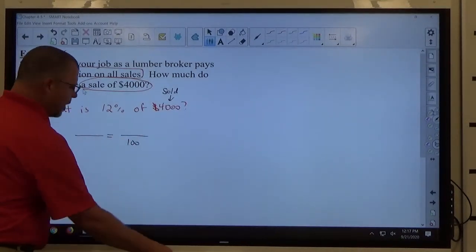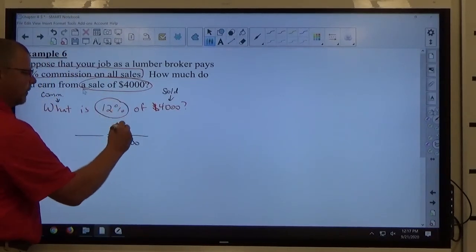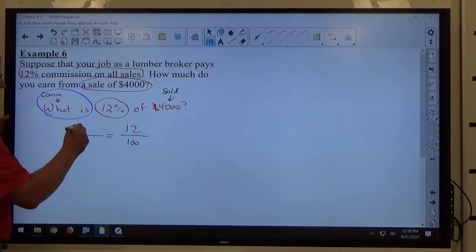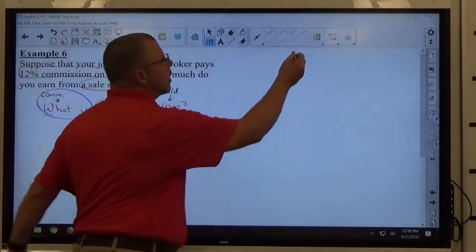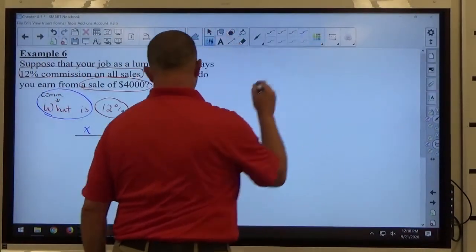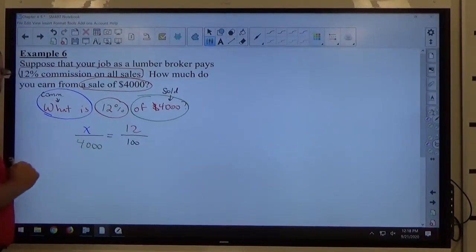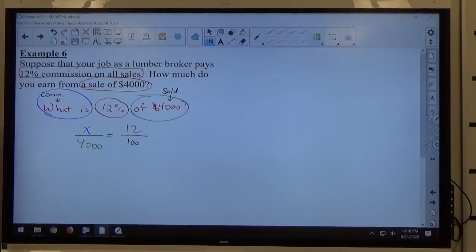I put my percent over 100. What is - is goes on top, we don't know. Of $4,000 - $4,000 goes on the bottom. So, is over of equals percent over 100. Every time, that's our percent proportion.